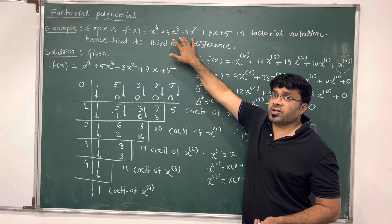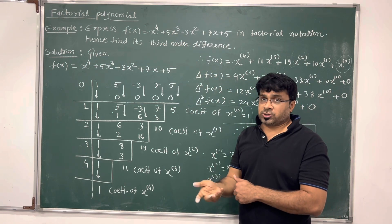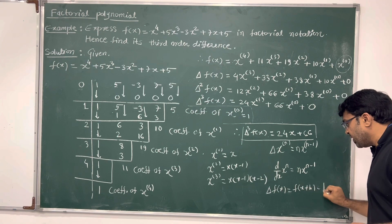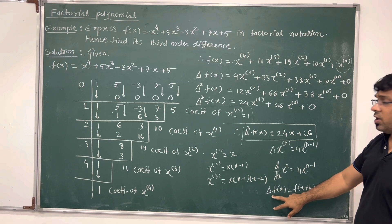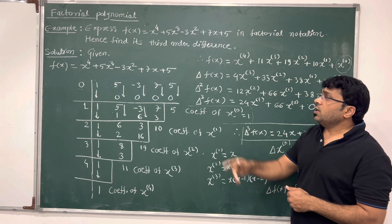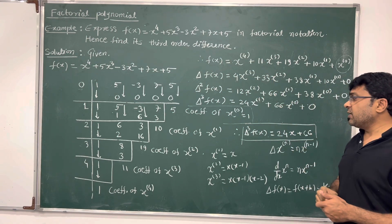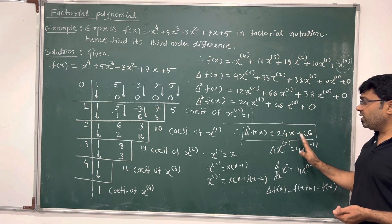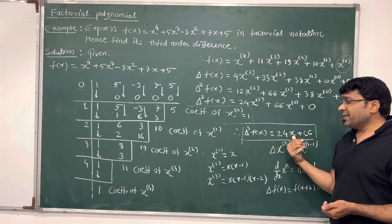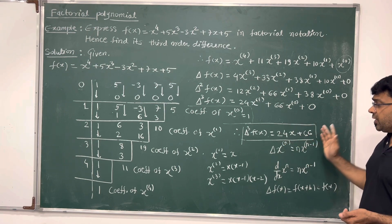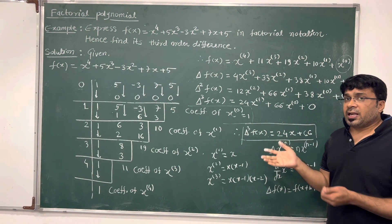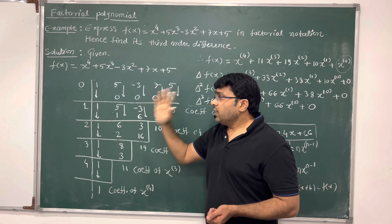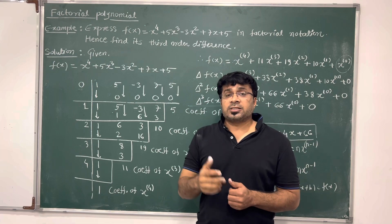Finding this by the actual definition of the difference operator — delta of f(x) equals f(x plus h) minus f(x) — would be a very lengthy process. Using factorial notation makes it easy to find the third forward difference. If asked to find the value at a particular point, say x equals 2 or x equals 3, you simply substitute that value into the expression for the third forward difference.